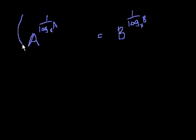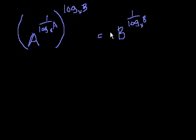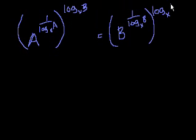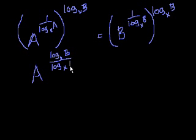Now let's raise both of these sides to the log base x of b power. So I'm going to raise this to the log base x of b power. And hopefully you'll see why I'm doing this. Well, on this side they'll cancel out, because this becomes a numerator, that's the denominator. And on this side you get a to the, this becomes a numerator, because we just multiplied the exponents.